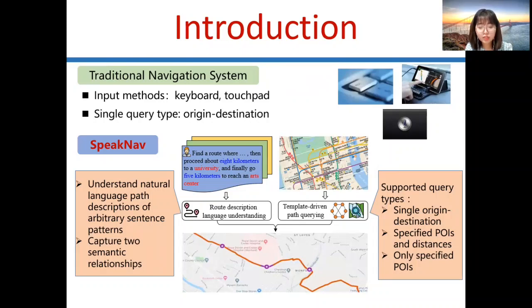SpeakNav addresses two challenges. The first is route description language understanding. SpeakNav understands natural language path descriptions of arbitrary sentence patterns and captures two semantic relations, including the relations between POIs and distances, and the relationship between POIs.